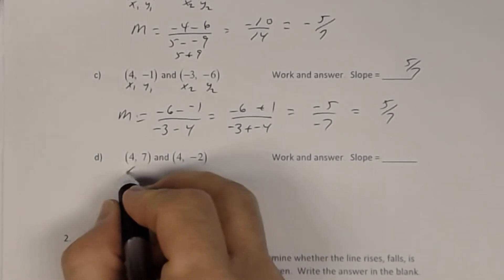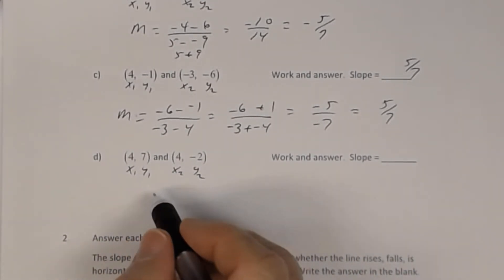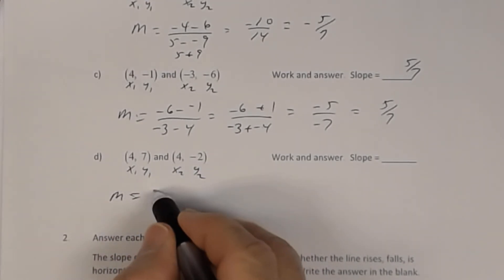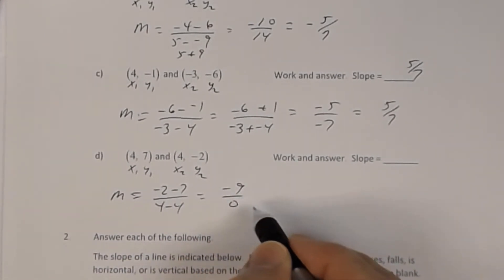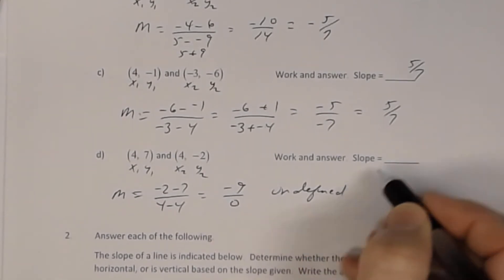Part D: x1, y1, x2, y2. The slope is negative 2 subtract 7 divided by 4 subtract 4. That's negative 9 divided by 0. It is expected that you know in terms of slope what that means is that the slope is undefined. So you can say undefined or no slope.